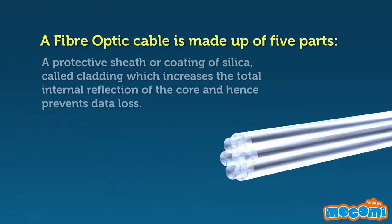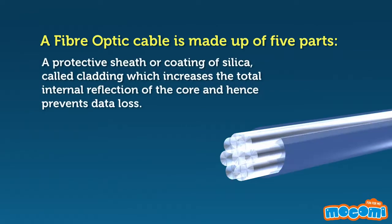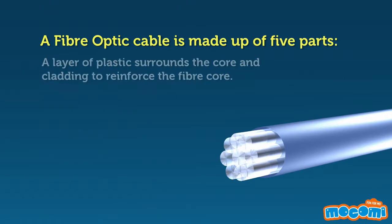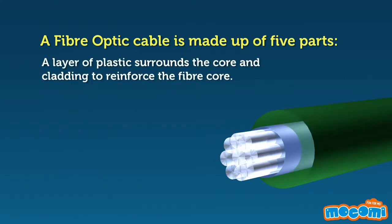A protective sheet or coating of silica, called cladding, increases the total internal reflection of the core and hence prevents data loss. A layer of plastic surrounds the core and cladding to reinforce the fibre core.